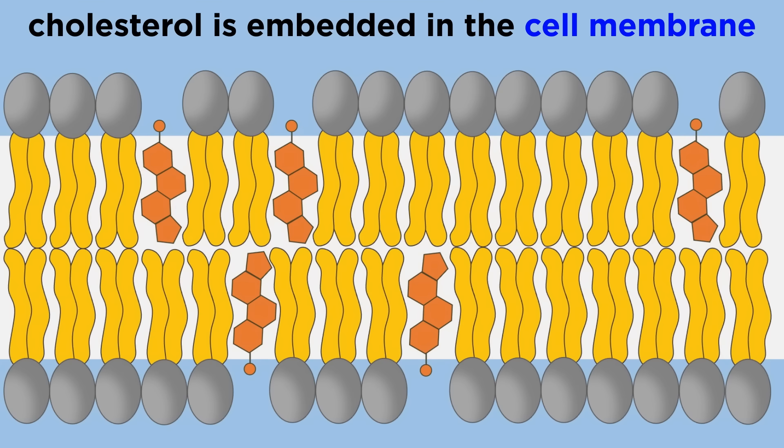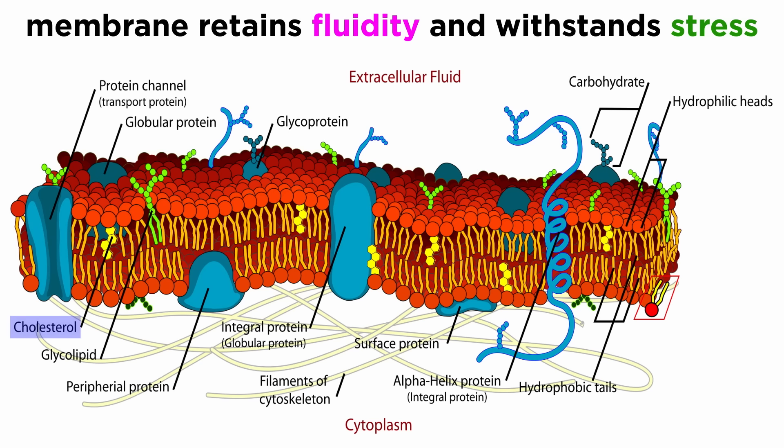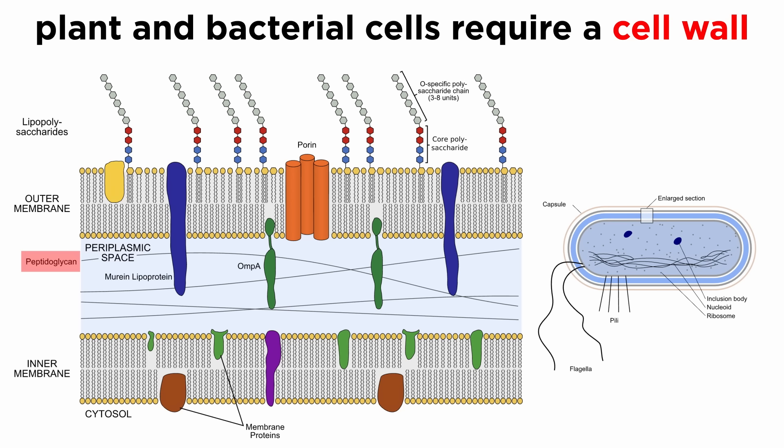It achieves this function by being embedded in the phospholipid bilayer, where the bulky hydrophobic region lies between the hydrophobic lipid tails of the phospholipids, and the polar terminal hydroxyl group faces outwards in the aqueous extracellular fluid. By virtue of cholesterol being embedded in the phospholipid bilayer, the cell can maintain fluidity under a wider range of temperatures and also retain cellular integrity while facing mechanical stress, which is part of the reason why animal cells do not require a cell wall like plants and bacterial cells.